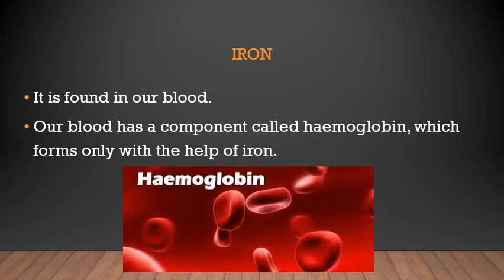If we have a blood deficiency, it is because we have an iron deficiency. Iron keeps our blood healthy and running. The red color of blood is due to the presence of hemoglobin, as shown in the picture on your screen.